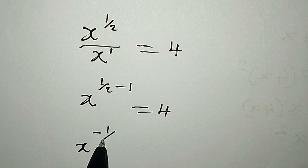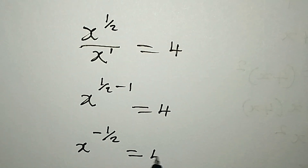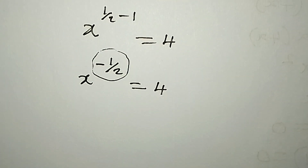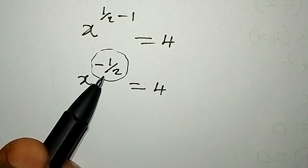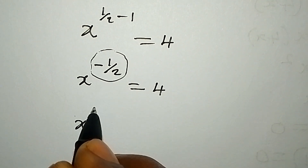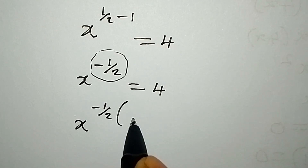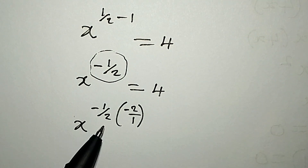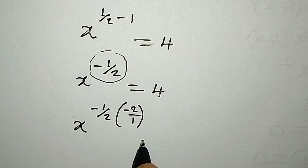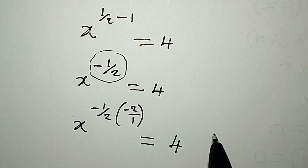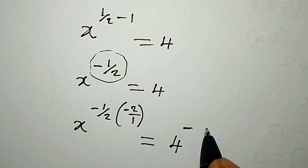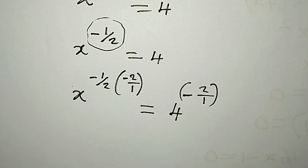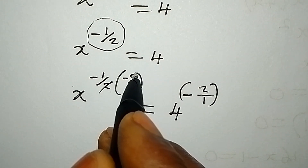So x to the power of 1/2 minus 1 gives us negative 1/2, and this is equal to 4. Now to remove this exponent, we multiply the power by its reciprocal. The reciprocal of negative 1/2 is negative 2/1, so we raise both sides: x to the power of (negative 1/2) times (negative 2/1) equals 4 to the power of negative 2/1.